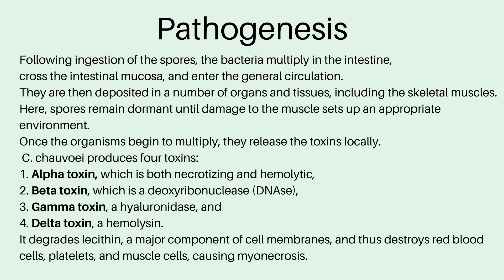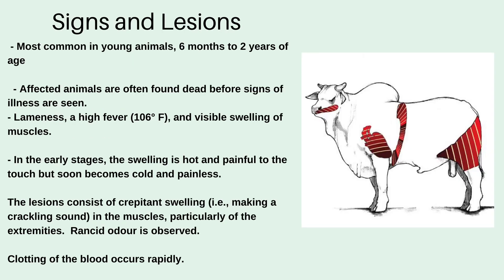As for the signs and lesions, blackwater is most common in young animals from six months to two years of age. Affected animals are often found dead before signs of illness are seen. Lameness, high fever, and visible swelling of muscles are observed. In early stages the swelling is hot and painful to touch, but becomes cold and painless in the later stages. The lesions consist of crepitant swelling — that is, swelling making a crackling sound — with rancid odor also observed in the muscles, particularly of the extremities.